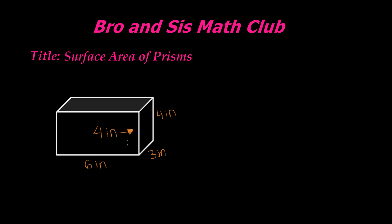So we have this rectangle, which is slightly larger than this one, and there are four of these, because this rectangular prism has six faces. So on the two sides and top and bottom, we have four rectangles, and then on these two sides we have two other rectangles, which are of different measurements.